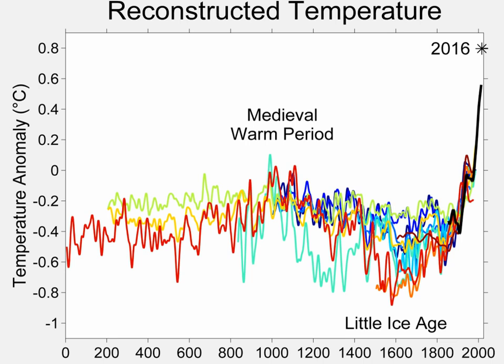The Intergovernmental Panel on Climate Change third assessment report considered the timing and areas affected by the Little Ice Age, suggesting largely independent regional climate changes rather than a globally synchronous increased glaciation. At most, there was modest cooling of the Northern Hemisphere during the period.